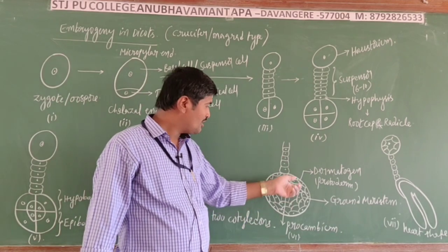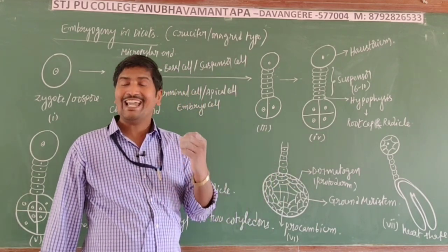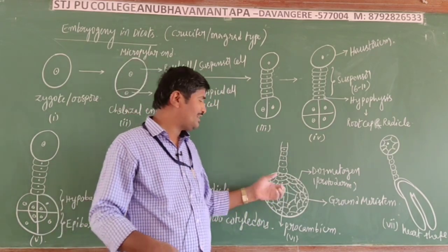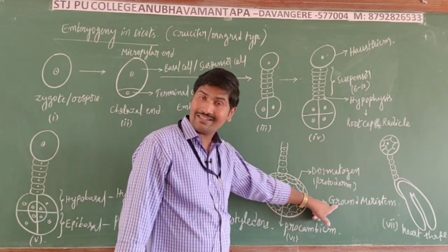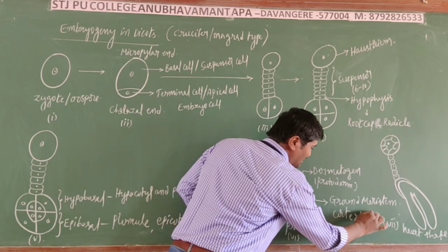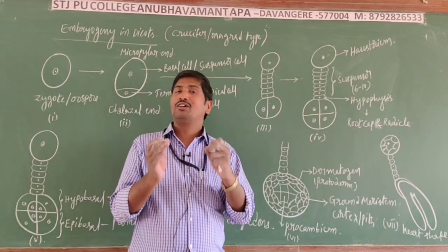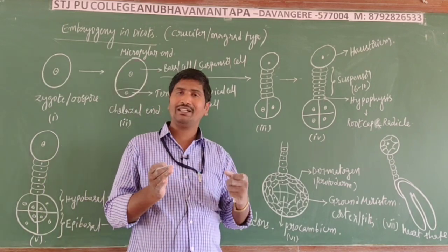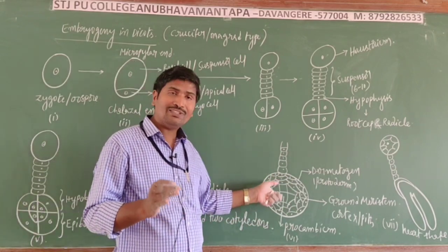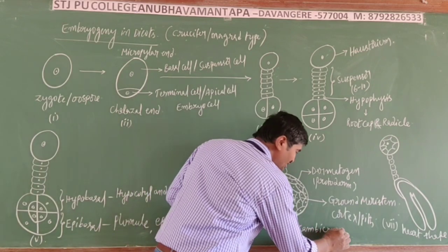The three zones are: first, the dermatogen (also called protoderm), which is the outermost layer and gives rise to the epidermis; second, the ground meristem, which gives rise to the cortex and the central pith region; third, the procambium, which gives rise to the vascular strands — the conductive tissue supplying food, water, and minerals.